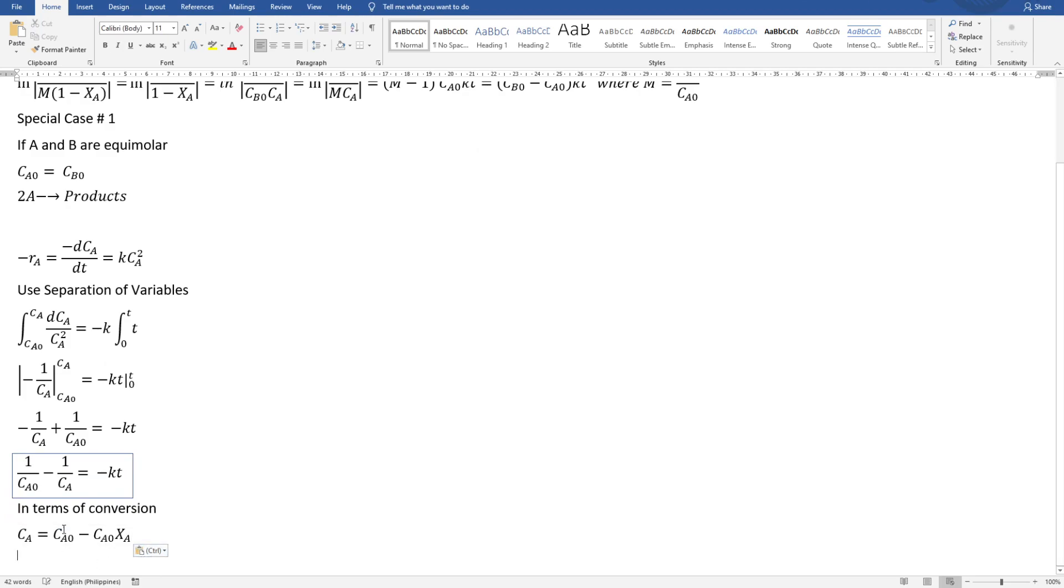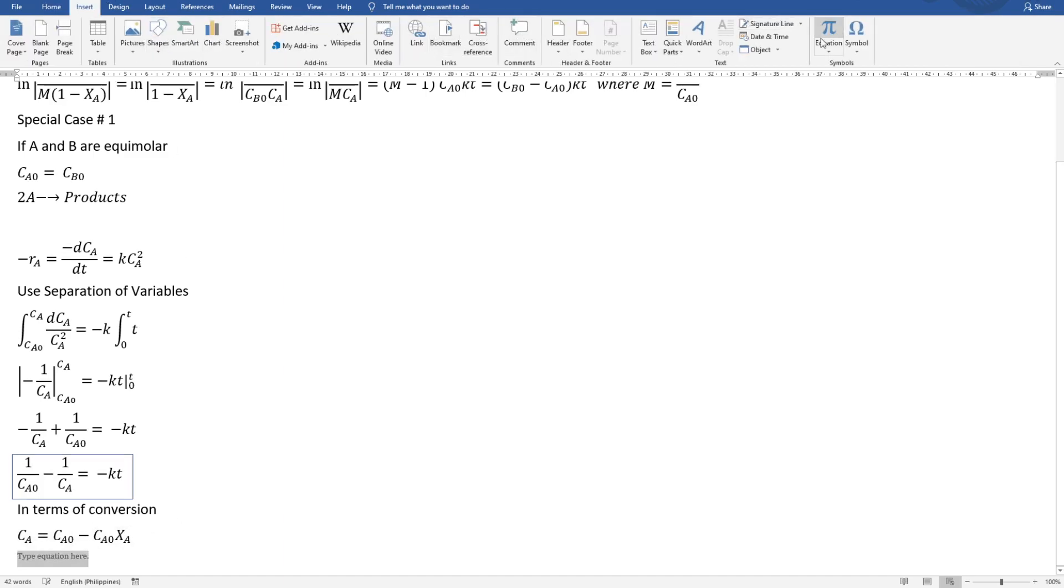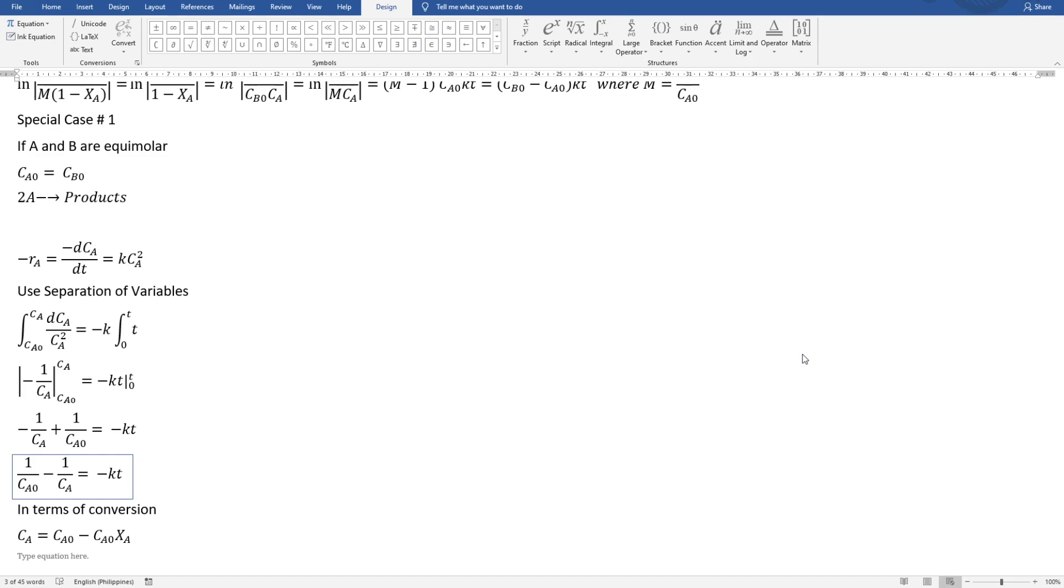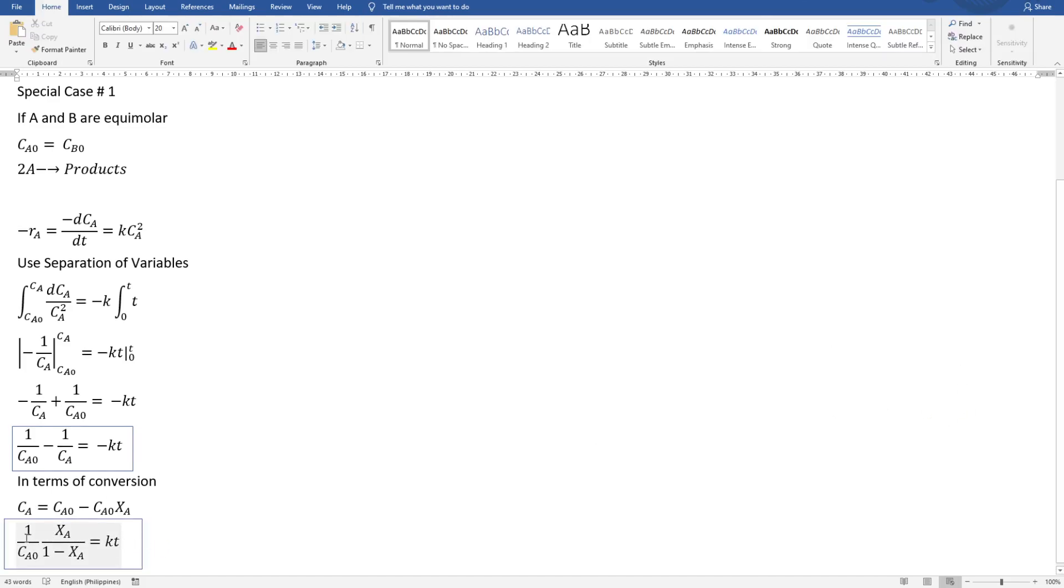Substituting this into this one, we will be getting this equation: 1 over CAO times XA over 1 minus XA. This is just manipulation of this equation, or you could already use the relationship between CA and XA here and then you integrate based on conversion.